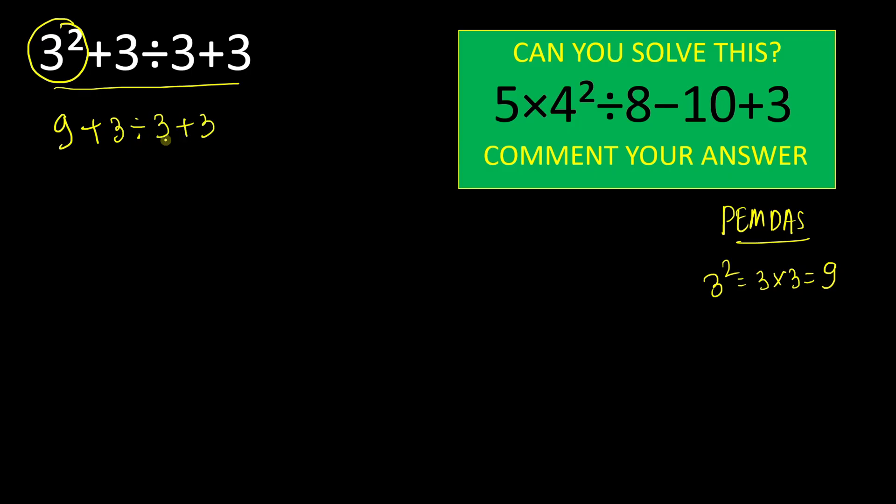Now next we have this division priority. 3 ÷ 3 will give result 1 here. So we will write 9 + 1 + 3. Now as all our addition, we can simply add, but if you go to order of operation we have to follow left to right.